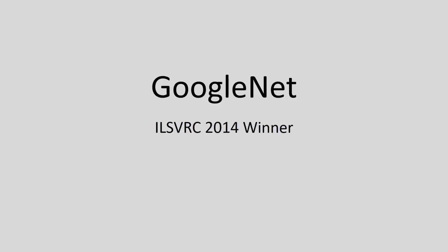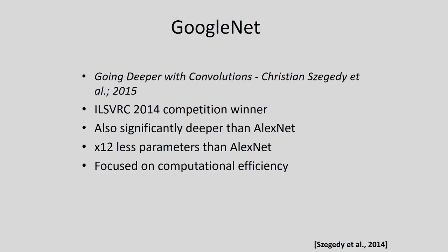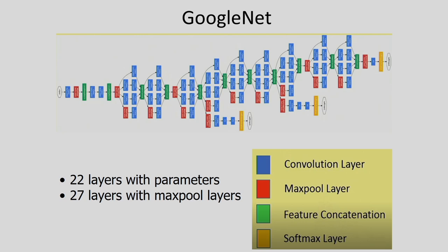The next important architecture is GoogleNet, the ILSVRC 2014 winner, developed in 2015. It is significantly deeper than AlexNet with 22 layers with parameters and 27 layers including max pooling layers. It has fewer parameters than AlexNet, and the main focus is computational efficiency. Max pooling layers have no tunable parameters.